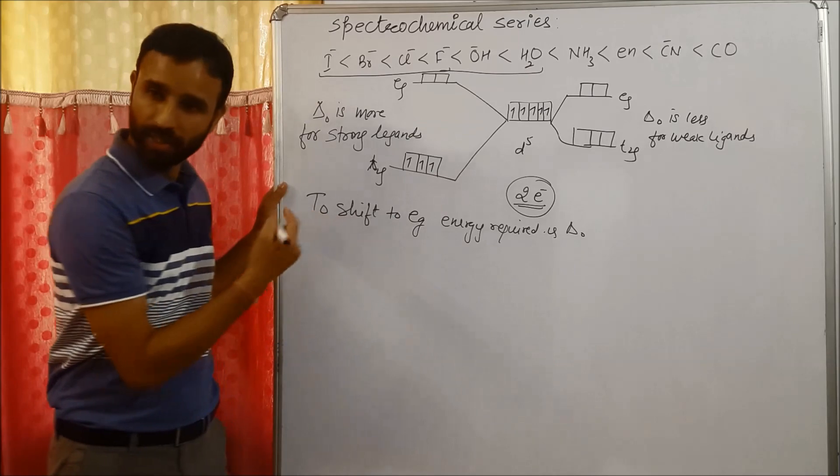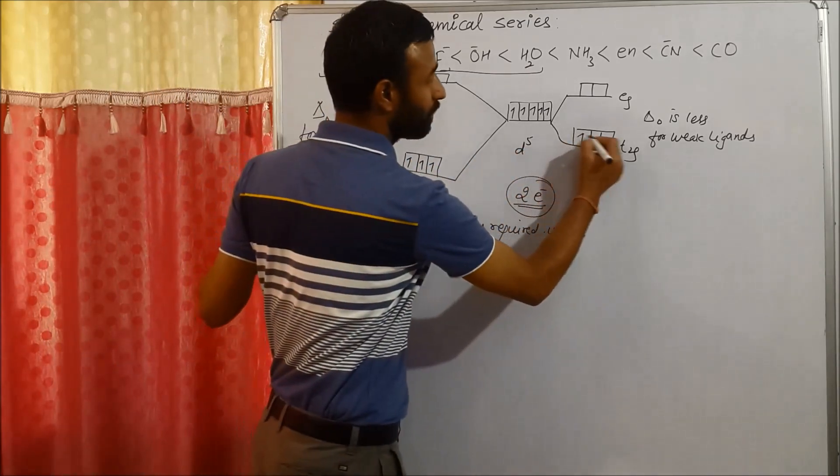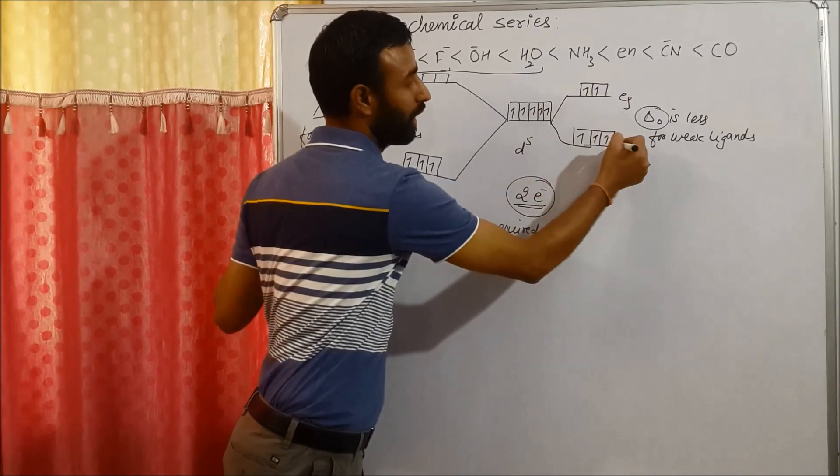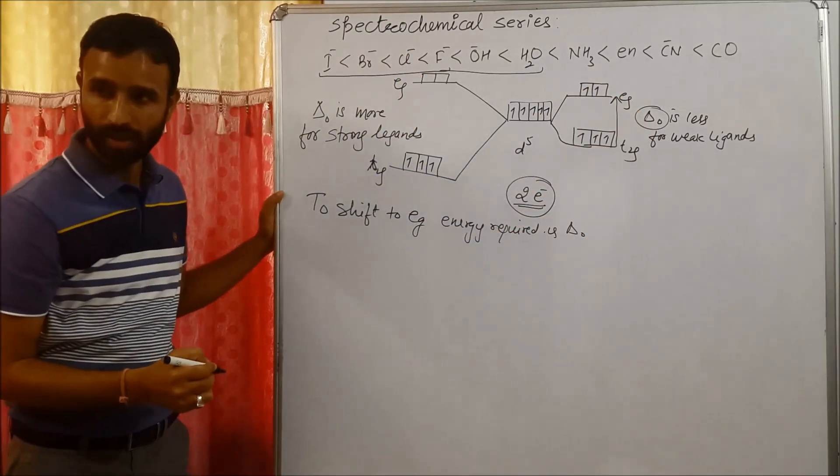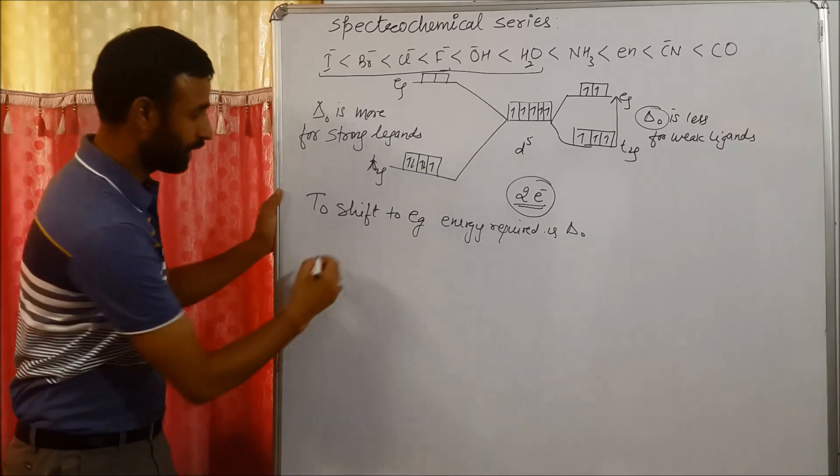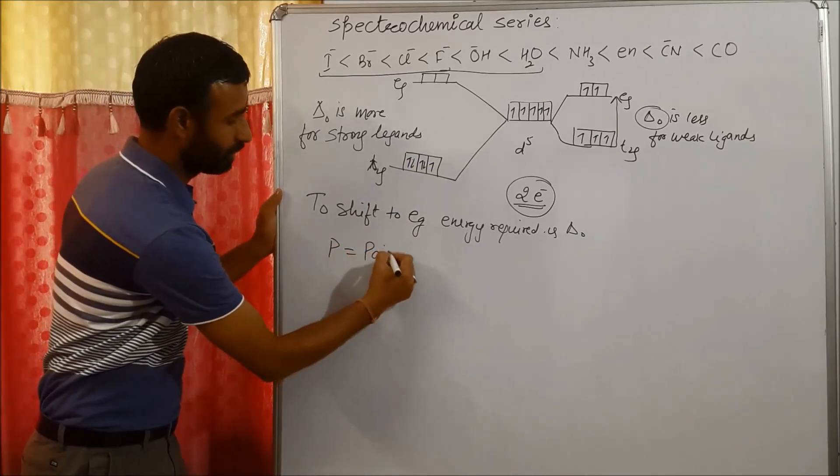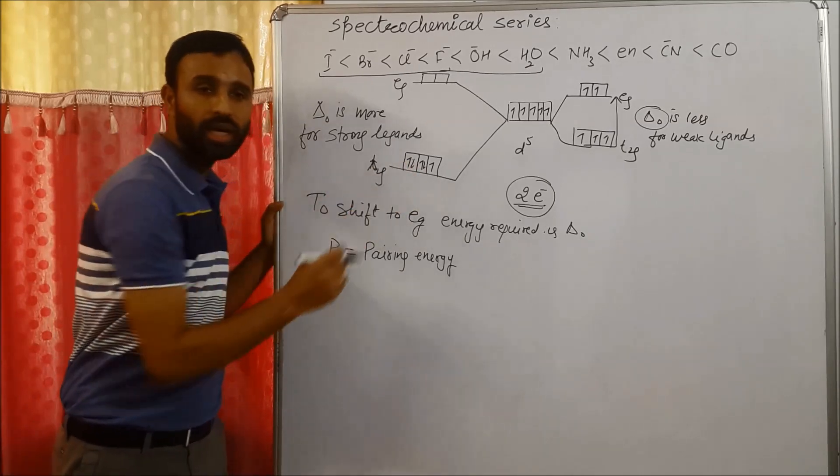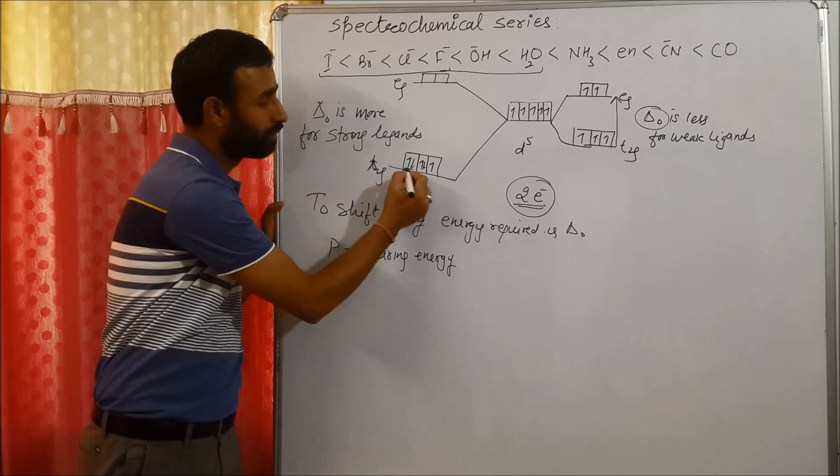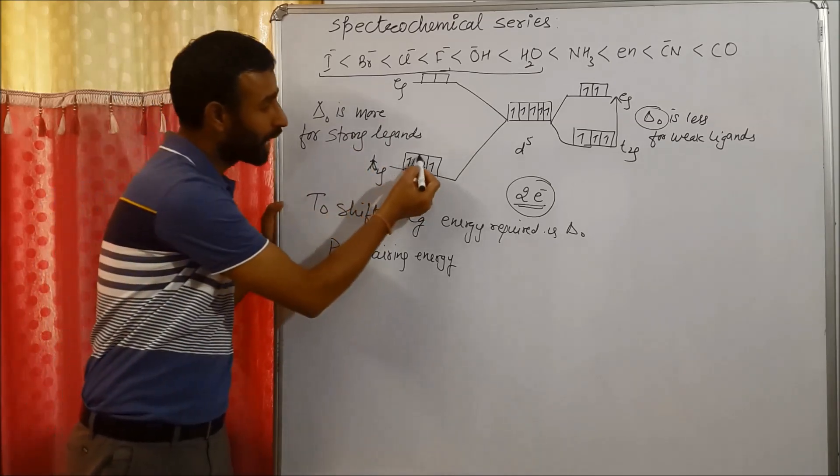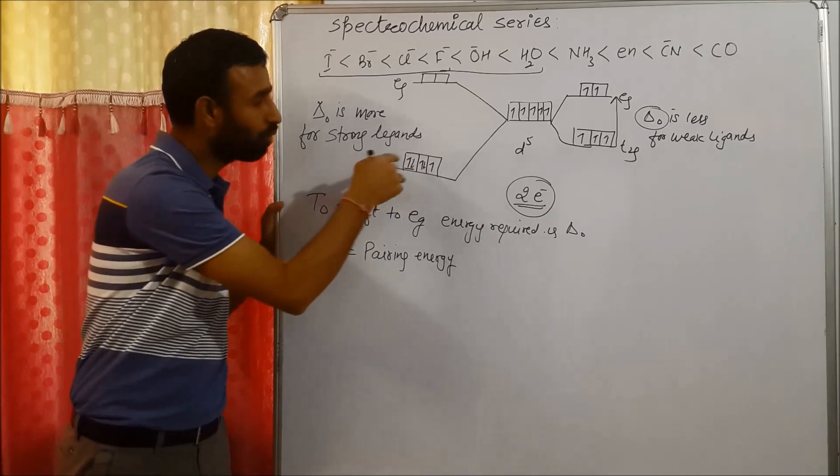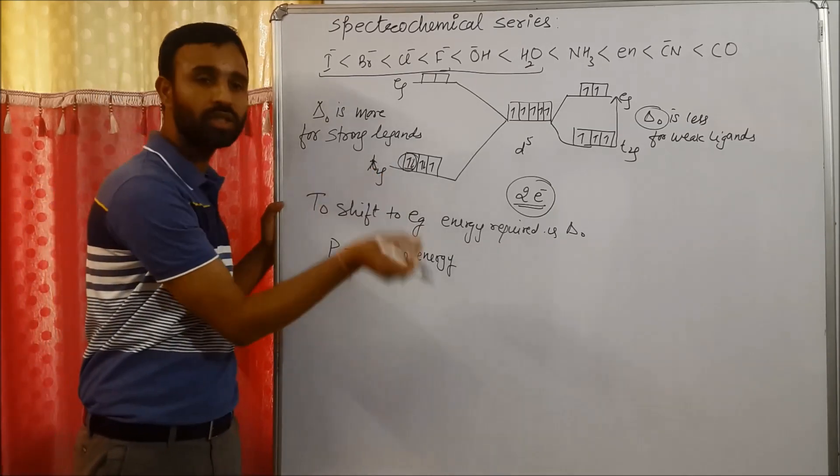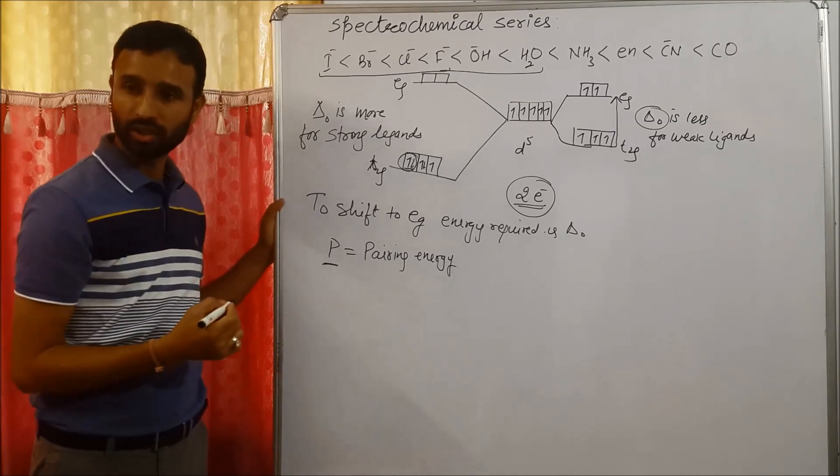And to get the electron paired, energy required is known as pairing energy. Because when they get paired, there is an inter-electronic repulsion between the paired electrons. So to get the electron paired, work is done against repulsive forces. Energy is required, and energy required is known as pairing energy. So two cases arise.